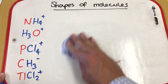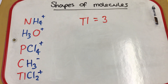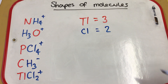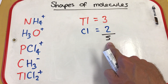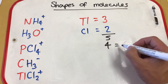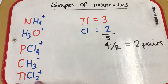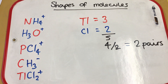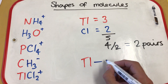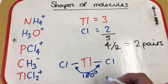The final example is thallium chloride. Thallium is in group three with two chlorines attached, giving five electrons in total. Dividing by two gives a non-integer, but we have a positive charge, so we take one electron away to give four electrons, then divide by two to get two pairs. With two pairs and no lone pairs, we have a linear molecule — thallium in the center with two chlorines either side — giving 180 degree bond angles.